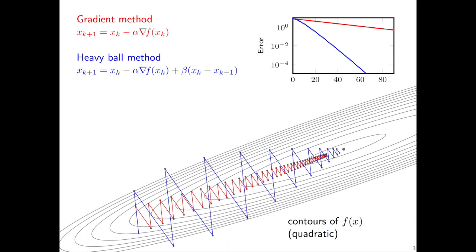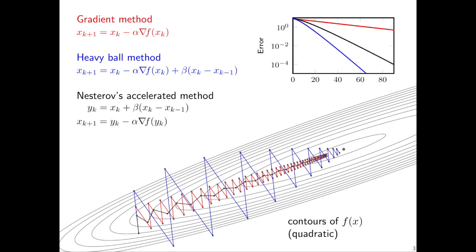There's another way to accelerate things called Nesterov's accelerated method. Here, XK+1 also does what appears to be a gradient step, but instead of evaluating the gradient at X, you evaluate it at Y, which is some weighted version of the current and previous iterate. Again you need two parameters alpha and beta, different from the heavy ball ones. It does achieve acceleration, but in a slightly different way — taking more direct but smaller steps. It's not quite as fast as the heavy ball method in this example, but there are many possible ways of achieving acceleration, and adding more parameters makes the tuning problem harder.